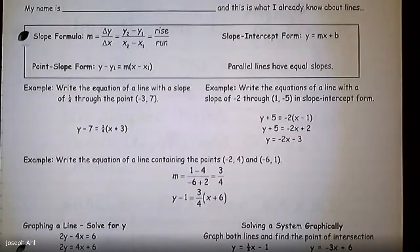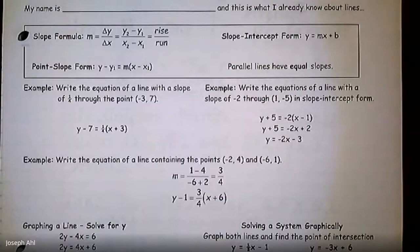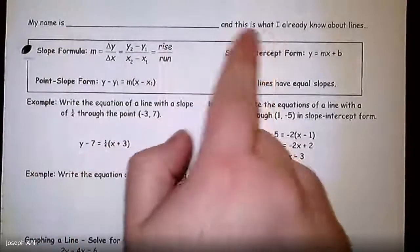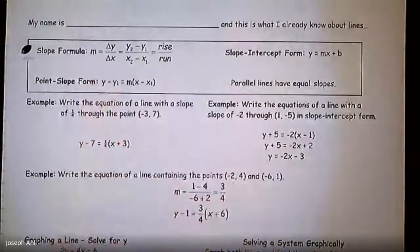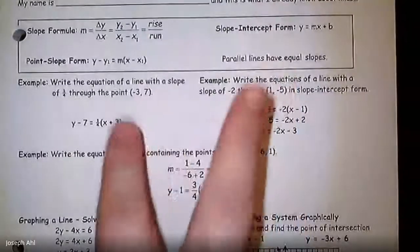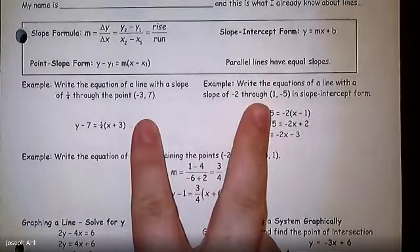Hey Algebra 2 honors students, this is going to be the start of our next unit. Unit 4 is in the same packet as unit 3, and you can find this worksheet on page 24 in the packet. This is something I put together for you to recall what you should already know about lines — things from Algebra 1 and geometry last year, as far as slope and the equation of lines are concerned. Here's a quick fact about parallel lines.